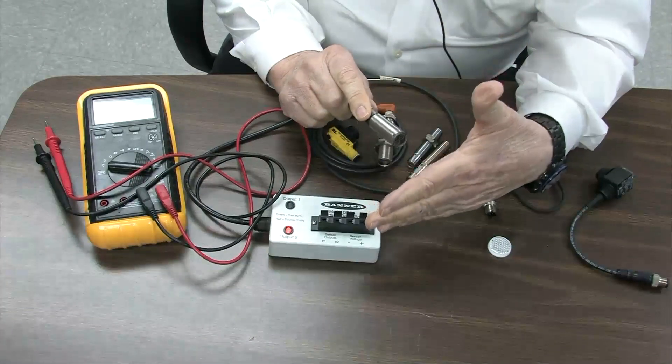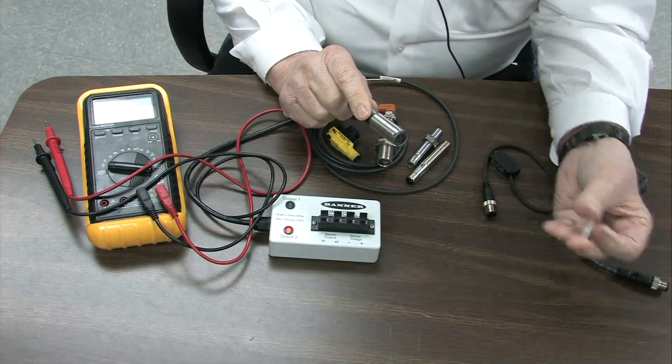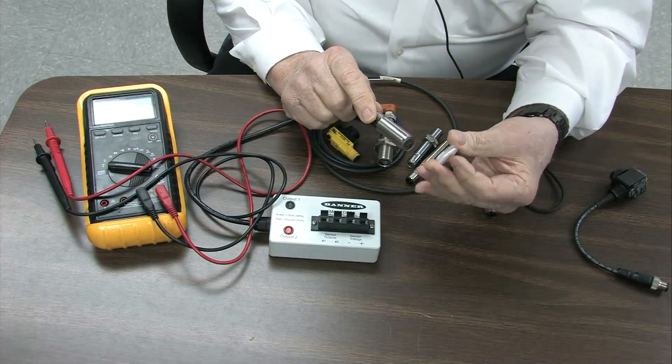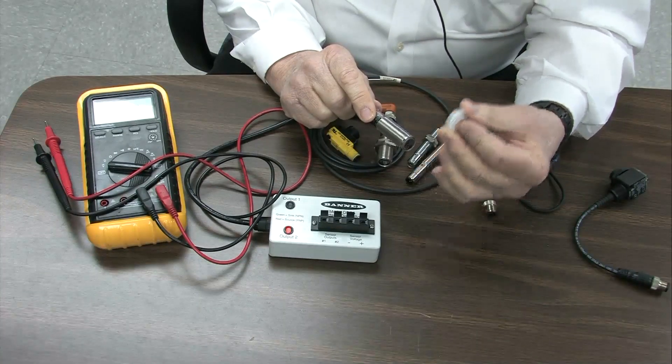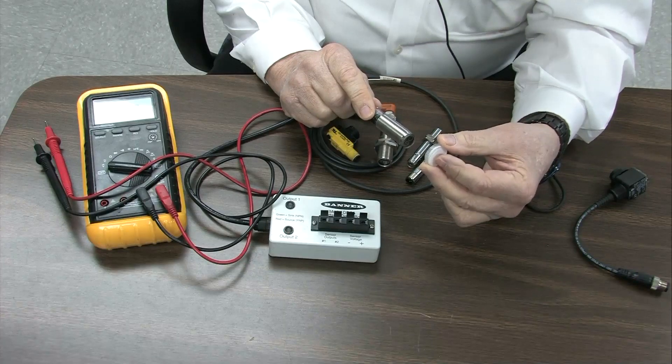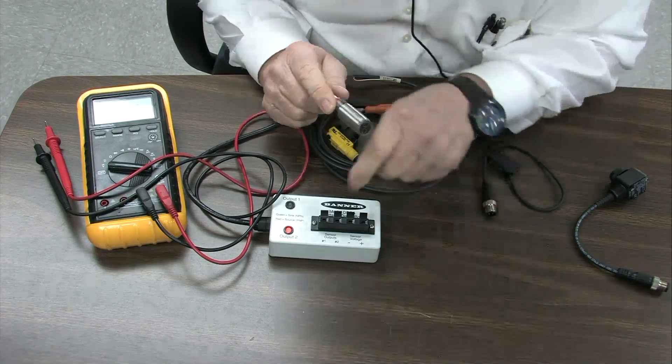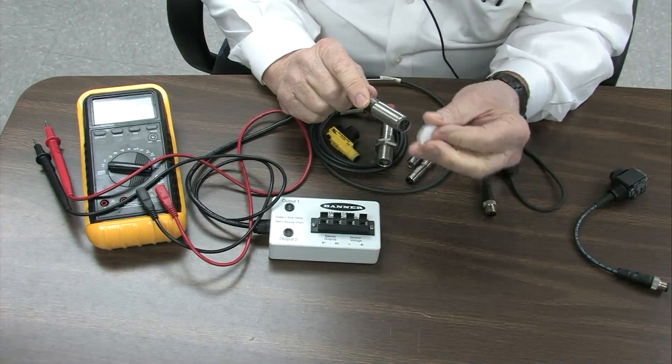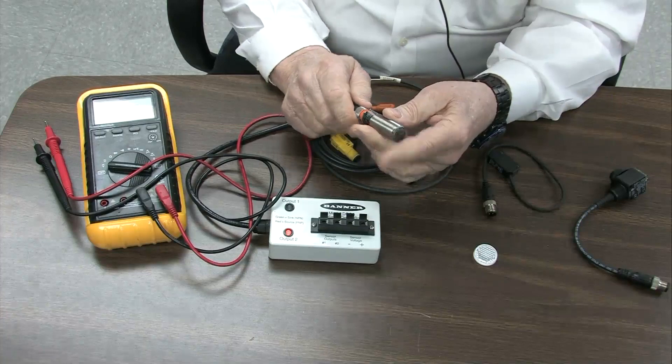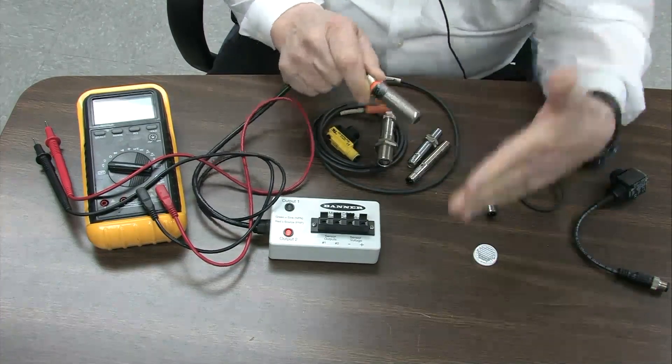I put my hand in front of the sensor, nothing happens, but if I put a reflective device in front of the sensor, output number two is turned on. Output number two, that's this one right here. This is the one that's going to go active. So this device, this particular device works, and you can see the output comes on when there's nothing in front of it.